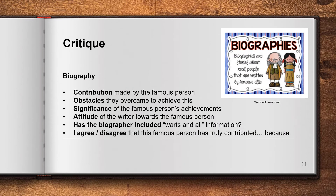When we read a biography of a famous person, we give our opinion about that biography — that's what critiquing is. We think about the contribution made by the famous person and the obstacles they overcame. We give our opinion about whether the famous person's achievements are significant, and we notice the attitude of the writer towards that person. Has the biographer included 'warts and all' information? Or is the biographer so in favour of the famous person that they leave out some of the dodgier details? You've got to have a big think and give your opinion.